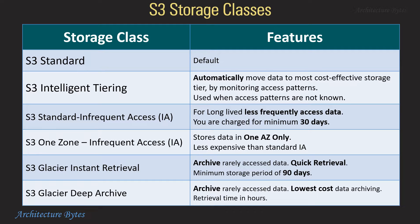S3 Intelligent Tiering is used where access patterns are not known. It automatically moves data to the most cost-effective storage tier by monitoring access patterns. S3 Standard Infrequent Access is for long-lived, less frequently accessed data — for example, once in 30 days. You are charged for a minimum period of 30 days.